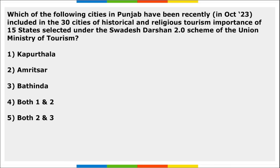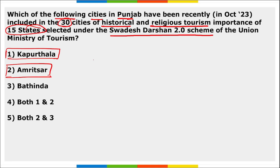Which cities in Punjab have been included in the 30 cities of historical and religious tourism importance under the Swadesh Darshan 2.0 scheme of the Union Ministry of Tourism? The answer is Kapurthala and Amritsar. These two Punjab cities are selected under the Swadesh Darshan 2.0 scheme.